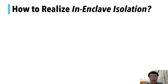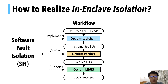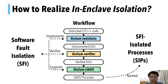You may be wondering: the idea of in-enclave isolation sounds cool, but how? After all, there is no hardware support for this. Our secret sauce is a compiler technique named software fault isolation, SFI. Here is the workflow of Occlum, which integrates SFI into the LibOS. Specifically, the Occlum toolchain implements SFI and generates instrumented ELFs. The Occlum verifier double-checks the security of the ELFs. Lastly, the LibOS loads the verified ELFs into the enclave and runs them as LibOS processes. Since these LibOS processes are isolated by SFI, we named them software isolated processes.